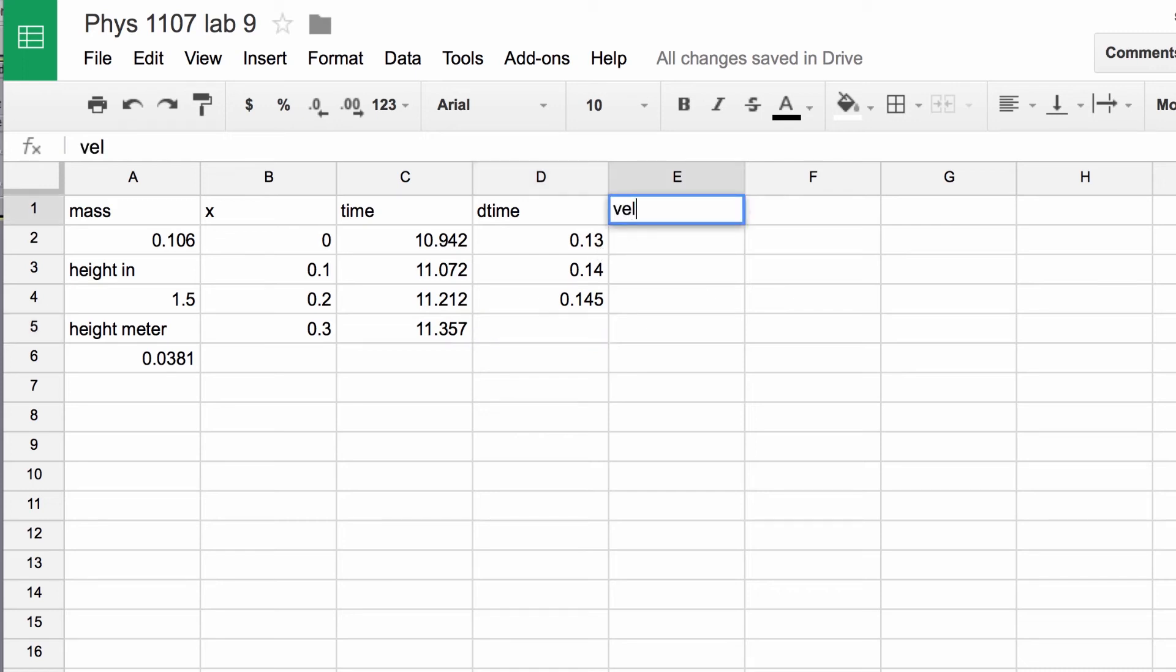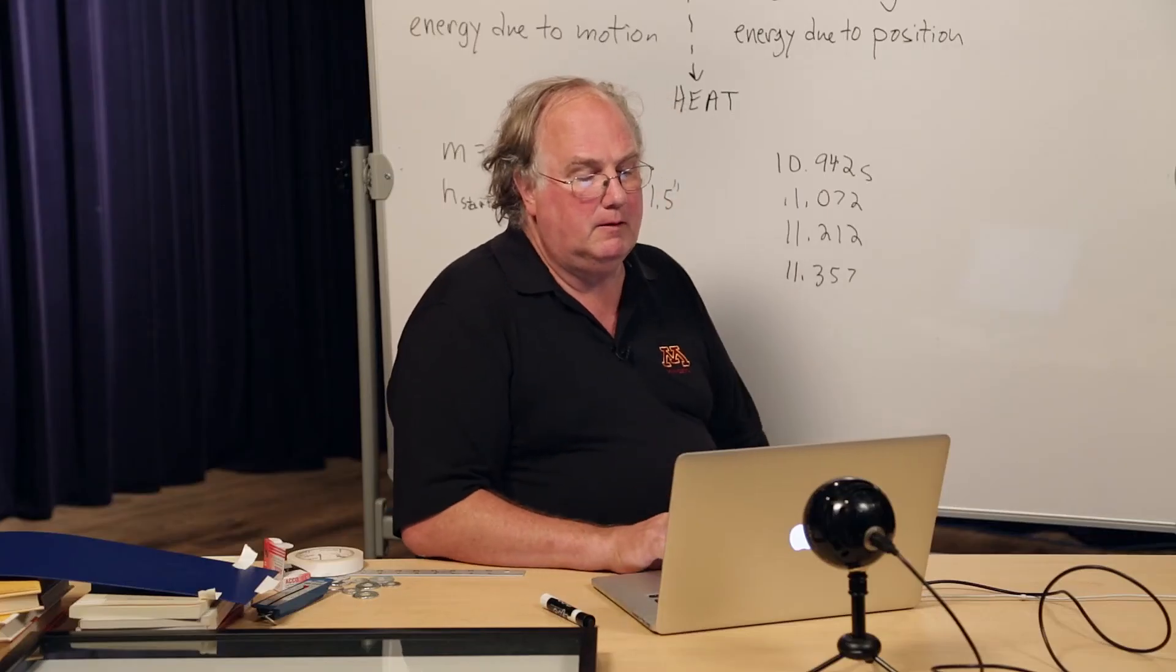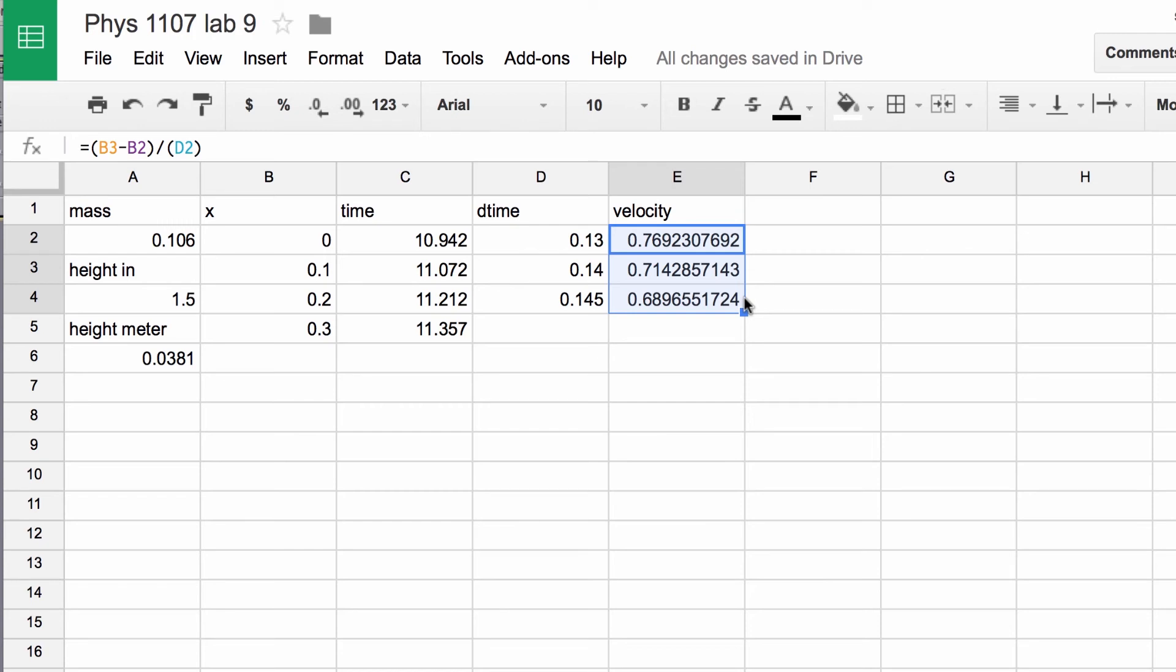Finally, we can make a column for velocity. This is given by yet another formula. The velocity is just the change in distance, which is the change in x, divided by the change in time, which is D time. And put that there. And there we have the velocity. Now I should be able to just kind of drag this down. Look at that. The velocity is staying nearly consistent. It's a little faster at the beginning, and then it slows down a bit. And that, of course, is our friend friction.